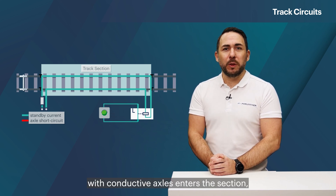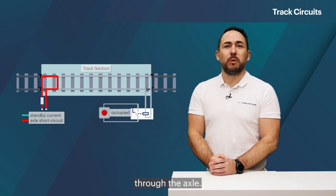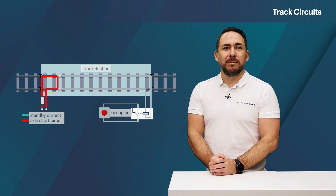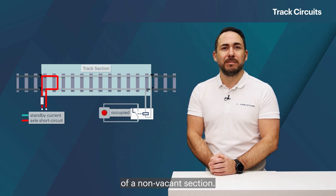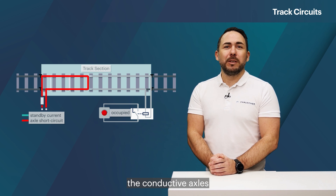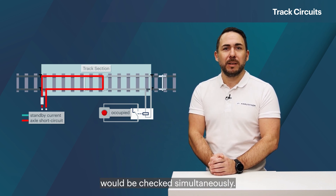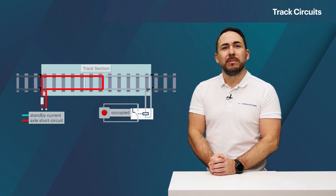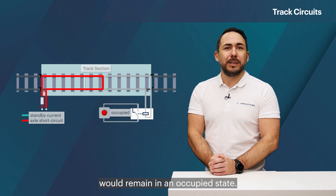In case a train with conductive axles enters the section, the rails are short-circuited as the current takes the easiest path through the axle. This occurrence lets the track relay de-energize, which consequently is the indication of a non-vacant section. In instances where a train loses a wagon, the conductive axles would still remain in the section and therefore the integrity of the train would be checked simultaneously. In this case, the respective track section would remain in an occupied state.